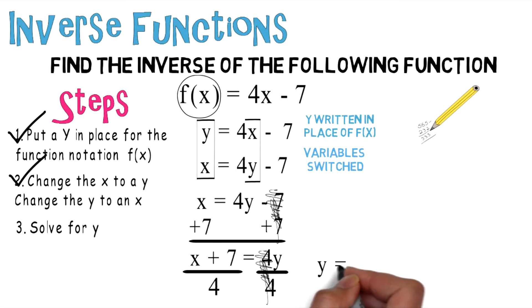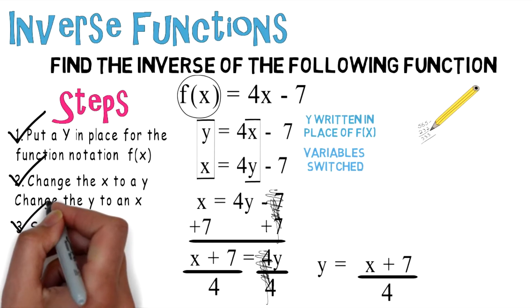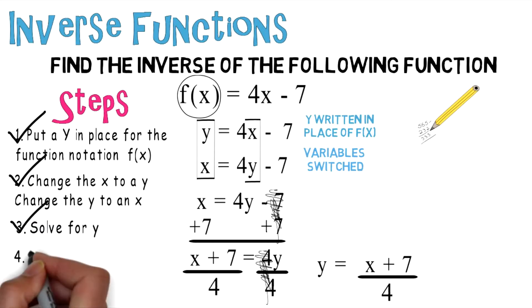And you wind up with y = (x + 7) divided by 4, and you can check off step number three. We move on to step number four, which is put inverse notation in place of y.